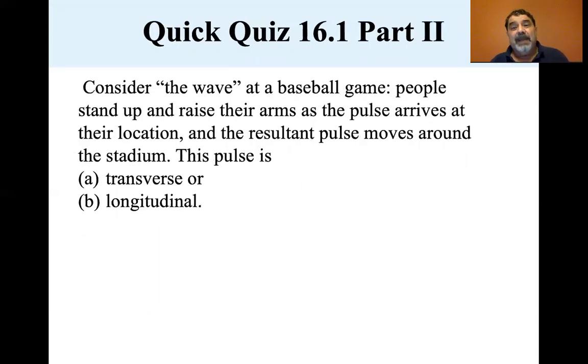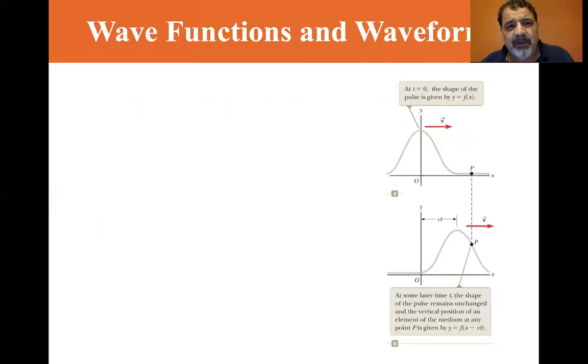Alright. Consider the wave at a baseball game. People stand up and raise their arms as the pulse arrives at their location. And the resultant pulse moves around the stadium. This pulse is transverse or longitudinal. Well, everybody's staying in their same seat. They're not being moved one way or the other. So it's a transverse wave. They're only going up and down. So it's a transverse wave.